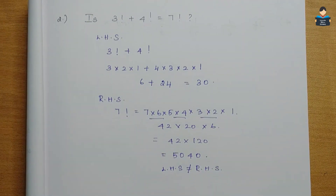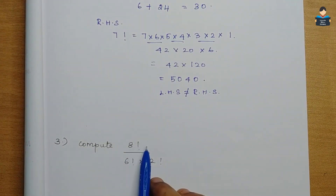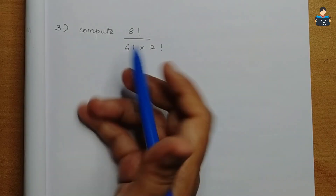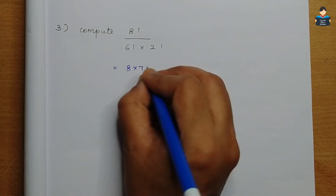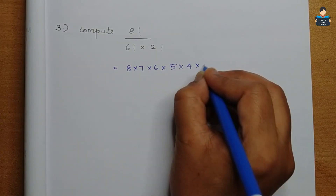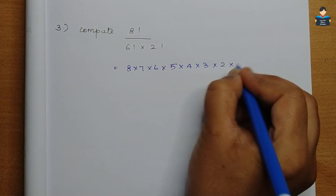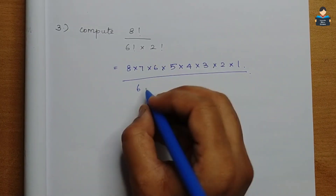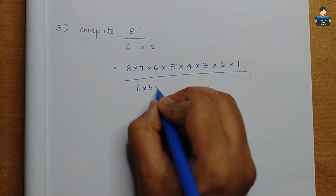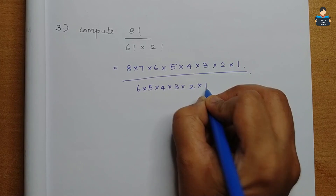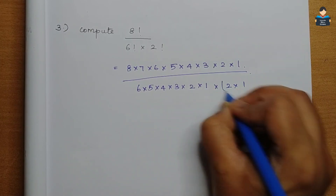Third sum: compute 8 factorial divided by 6 factorial into 2 factorial. We write 8 factorial as 8 into 7 into 6 into 5 into 4 into 3 into 2 into 1, and the denominator is 6 factorial into 2 factorial, i.e., 6 into 5 into 4 into 3 into 2 into 1 into 2 into 1.